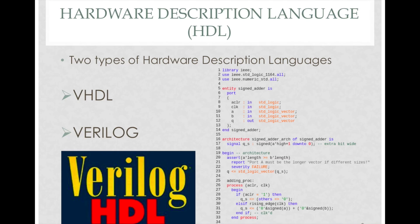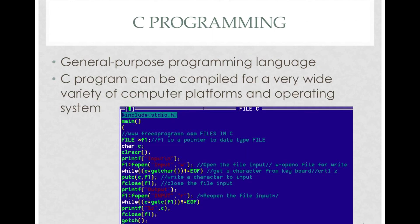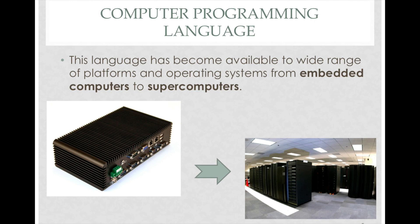Now that we have seen the characteristics of both these languages, let's talk about a general computer programming language — C. C programming is a very general purpose programming language which can be compiled for a very wide variety of computer platforms and operating systems, from embedded computers to supercomputers.